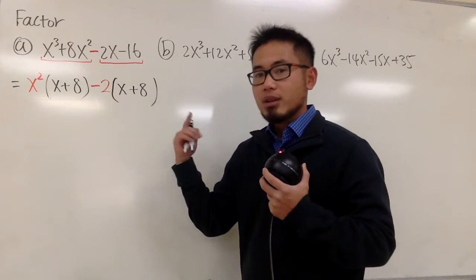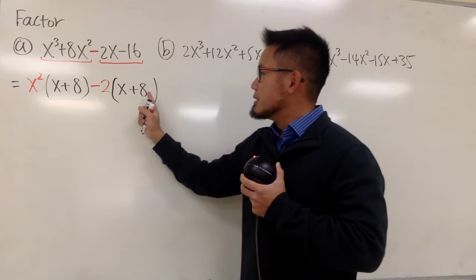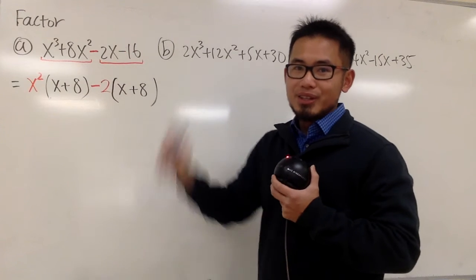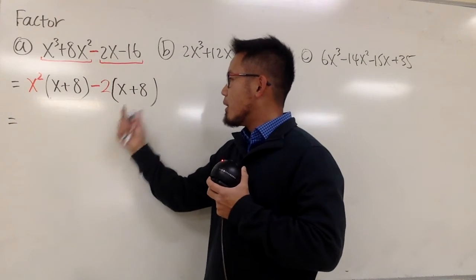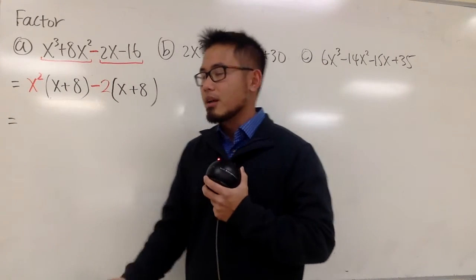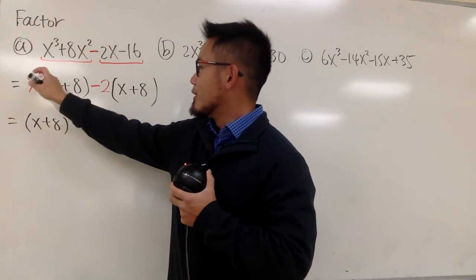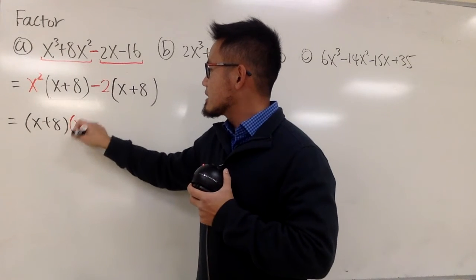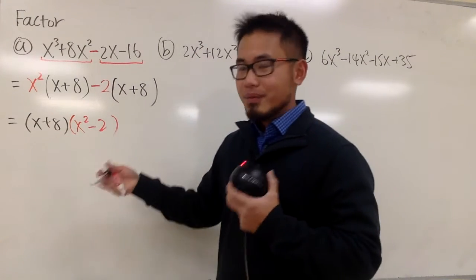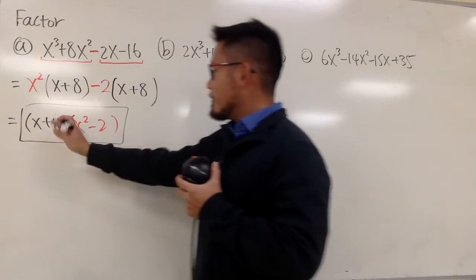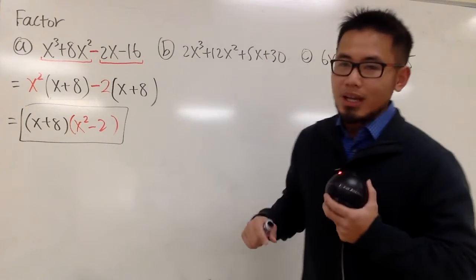You can just multiply this quickly in your head to double check: negative 2 times x gives our negative 2x, and negative 2 times 8 gives the negative 16. Now you see the first part minus the second part — both of them have x plus 8 in common, so I can factor that out. The remainder is x squared minus 2. We cannot do anything more, so this is our final answer. The order of the factors doesn't matter.